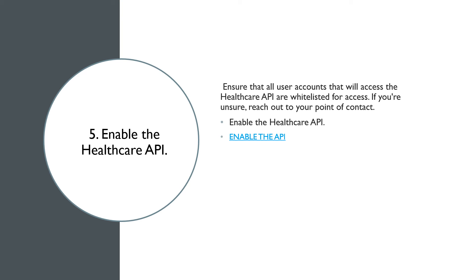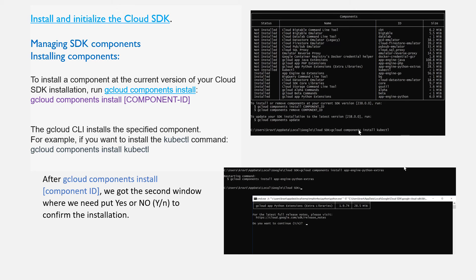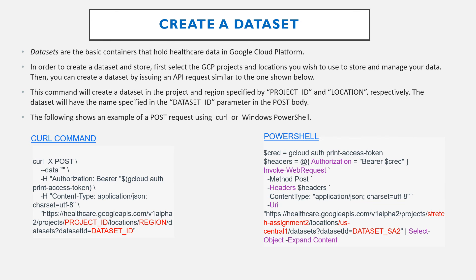The next important step is gaining access to the Healthcare API. Ensure that all user accounts that will access the Healthcare API are whitelisted for access. If you are unsure, reach out to your point of contact. To enable the Healthcare API, go to the link to enable the API. After getting access, you can start to install the Cloud SDK. Go to the link to install and initialize the Cloud SDK shown on this slide. To install a component for the current version of your Cloud SDK installation, run the command 'gcloud components install' with the component ID. You will see a window where you should choose yes or no to confirm the installation.